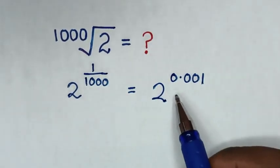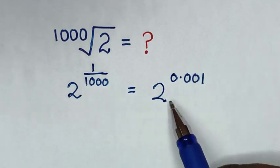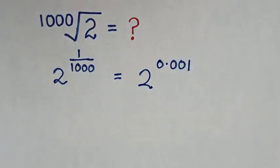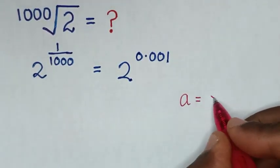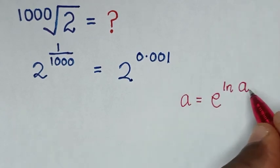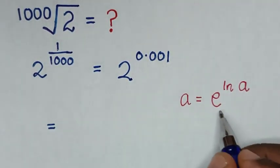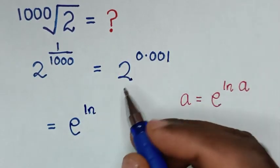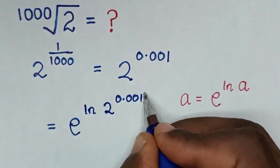In the next step, we will approximate this exponential form. We will approximate it by using natural log. From the natural log formula, a is equal to e to the power of ln a. So it will be equal to e to the power of the natural log of 2 to the power of 0.001.